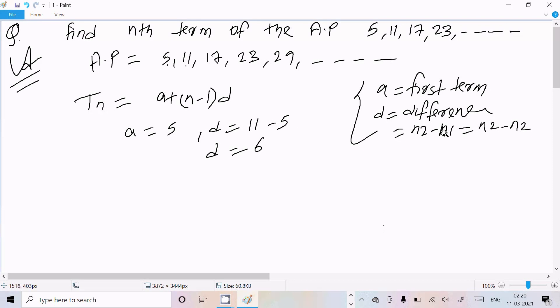So here, n2 minus n1, n3 minus n2: 17 minus 11, the value comes to 6. So if you calculate the difference between two numbers, it will always come to 6.